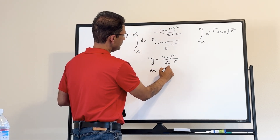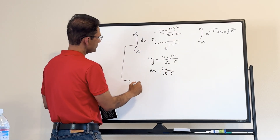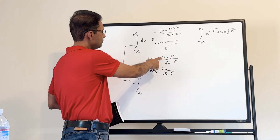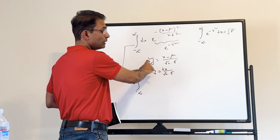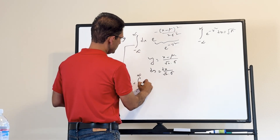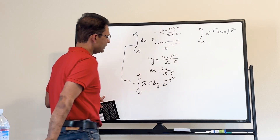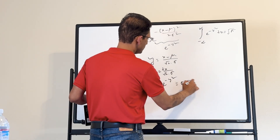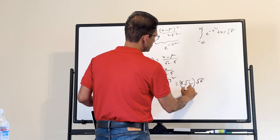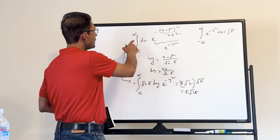The limits don't change: when x is negative infinity, y is negative infinity, and similarly for positive infinity. So dx equals square root of 2 times sigma dy, and the integral becomes sigma times square root of 2 times the integral of e to the minus y squared dy, which equals sigma times square root of 2 pi.